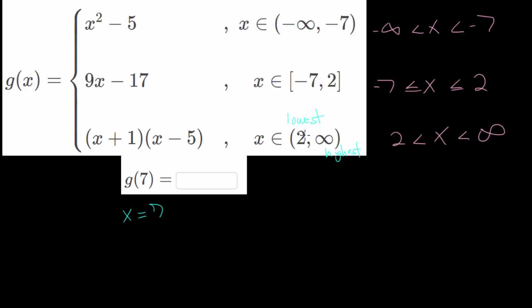So, 7 is between 2 and infinity. The lowest value is 2, and 7 is bigger than that. But the highest value is infinite, and 7 is, of course, smaller than that. So it's in this interval.